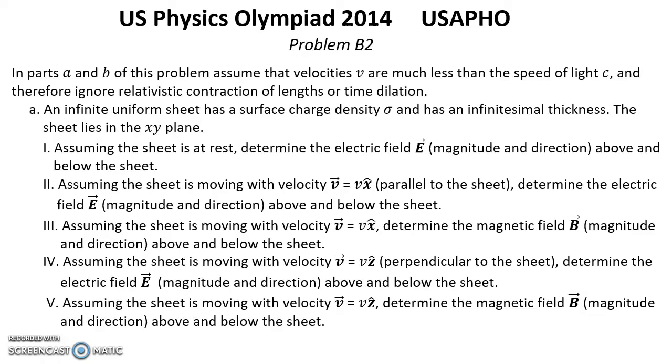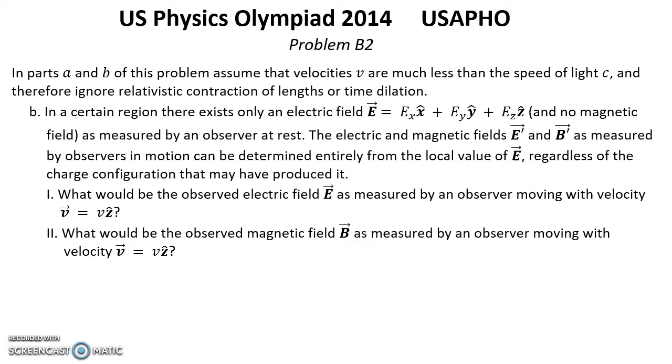Part B: In a certain region there exists only the electric field E in the form of E_x plus E_y plus E_z, and no magnetic field as measured by an observer at rest. The electric and magnetic fields E prime and B prime as measured by observers in motion can be determined entirely from the local value of E, regardless of the charge configuration that may have produced it.